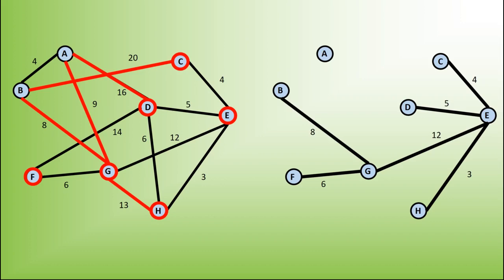The minimum weight edge now is 8, going from B to G. This adds the vertex B, adds the edge from A to B, and I also now don't need to consider the edge going from B to C. The minimum weight edge is now 4 — I add that in, and this has added the last vertex to my diagram, so we have the minimum spanning tree.